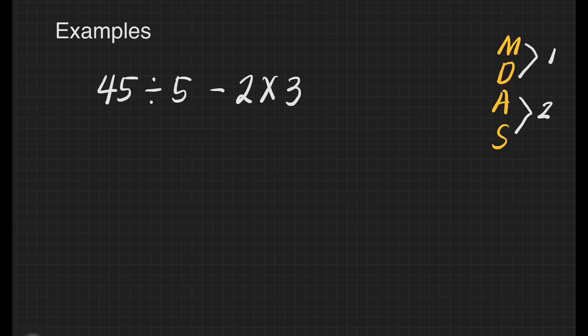What are we going to do first? Multiply, subtract, or divide? We will divide first because it appears first from left to right. 45 divided by 5 equals 9. Then copy minus 2 times 3.